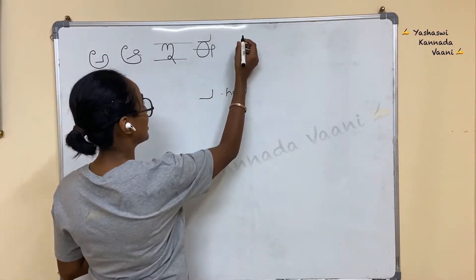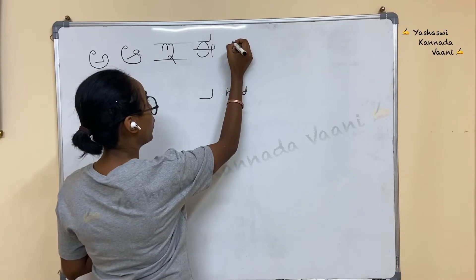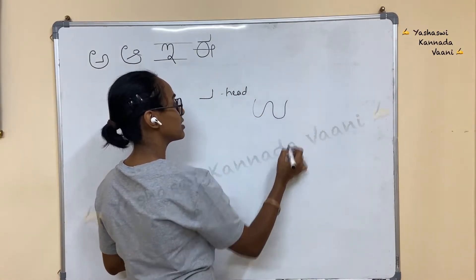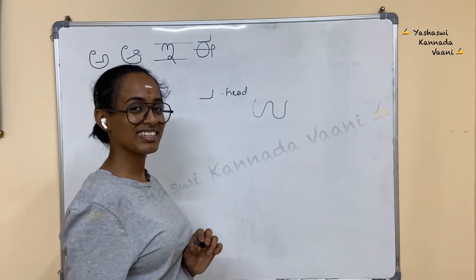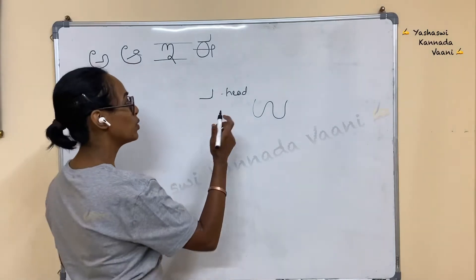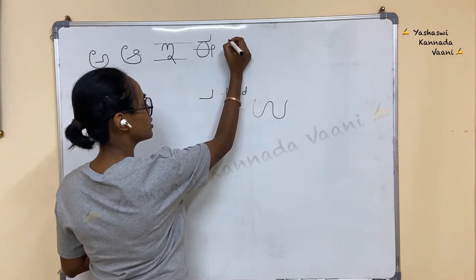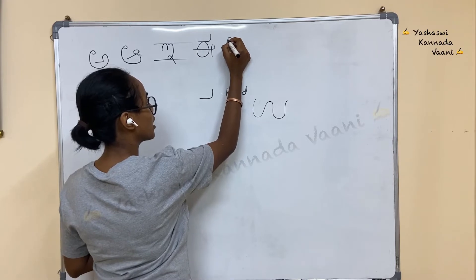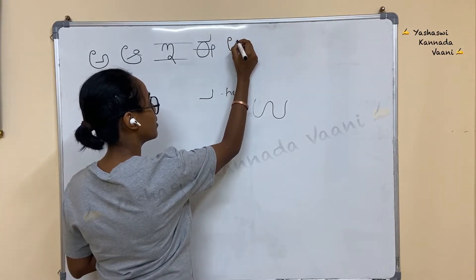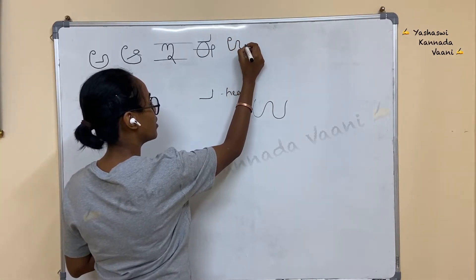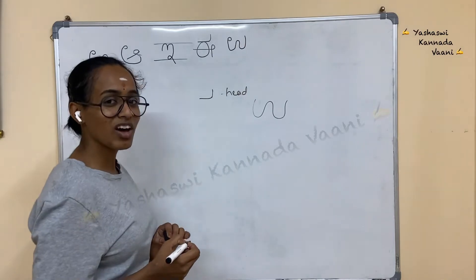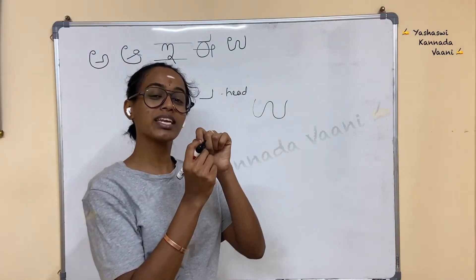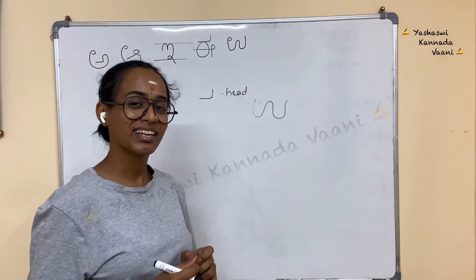The next is U (ಉ). Remember the waves when you write like this. U is just like a wave — with a small circle. We will start from the top, come down, go up, down, and up. This is your letter U (ಉ). Uguru — Uguru is a nail.